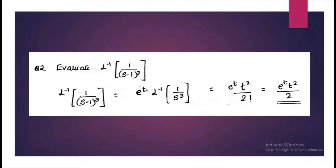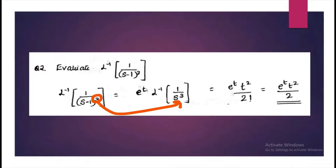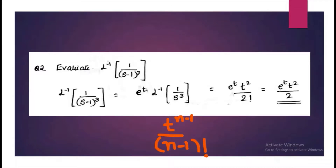Next, find the inverse Laplace transform of 1 by S minus 1, the whole cube. If S in the denominator is shifted by some term — here it is minus 1 — then after taking the inverse it is multiplied by an exponential term, that is E raised to t, since S is shifted by 1. This is according to the shifting theorem. What remains is 1 by S cubed, and the inverse of that is T raised to N minus 1 by N minus 1 factorial, that is T squared by 2 factorial. So the full answer is E raised to t times T squared by 2 factorial.